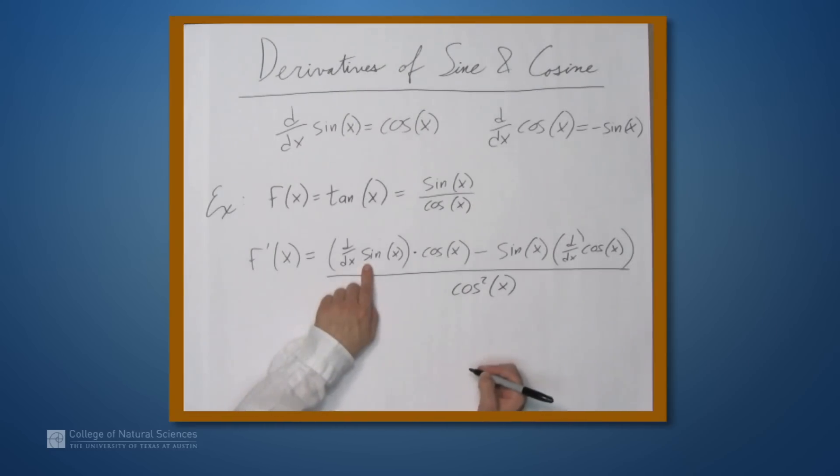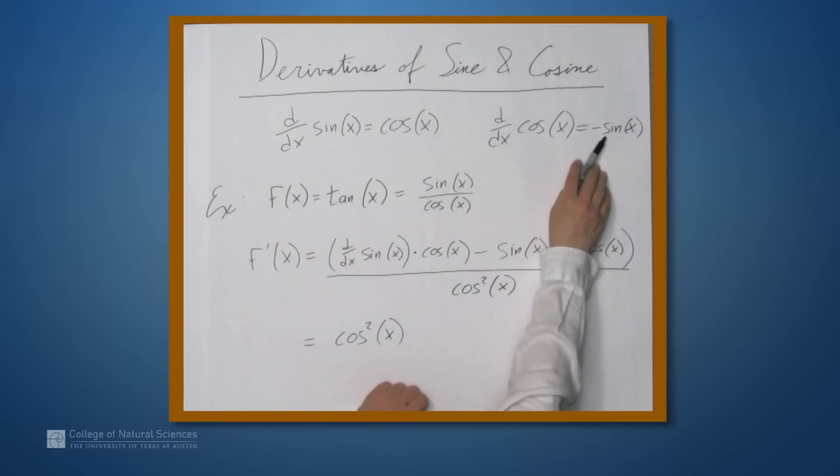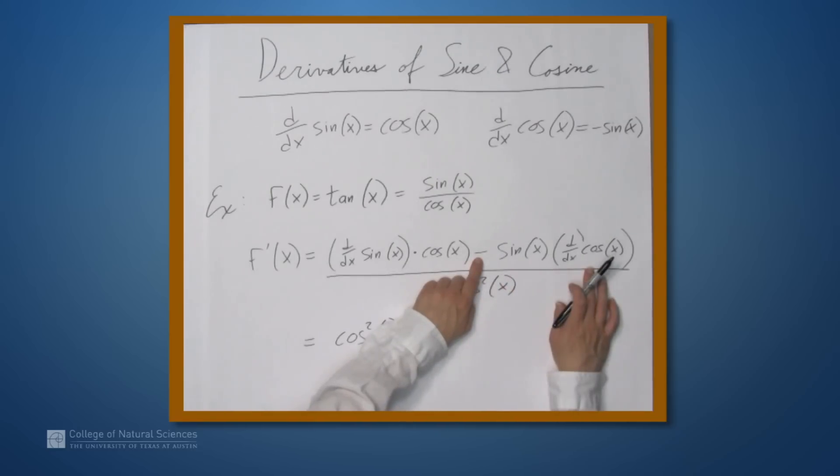So what happens in the numerator? Well, the derivative of sine is cosine. So we have cosine times cosine, so we get cosine squared x. And what happens over here? Well, we have sine x times the derivative of cosine x. The derivative of cosine x is negative sine. So we have negative sine of x times negative sine of x, which gives us a plus sine squared x.